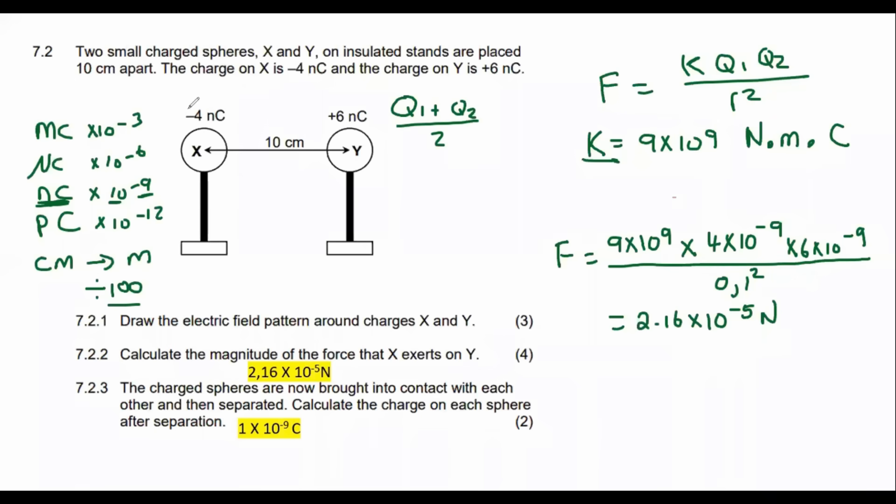Now, I always go on about why you mustn't put negatives in the formula. But I'm talking about this formula and I'm talking about the E equals KQ over R squared formula. But when we are busy with this formula, you must put the negative. So you would say minus 4 times 10 to the minus 9 plus 6 times 10 to the minus 9 over 2. And if you had to go work that out, that's going to be 1 times 10 to the minus 9. And the units of that would just be Coulomb.